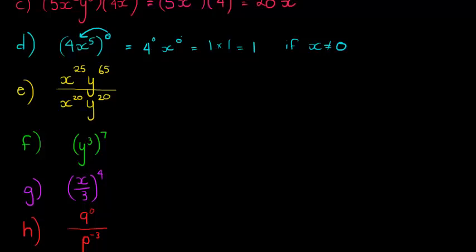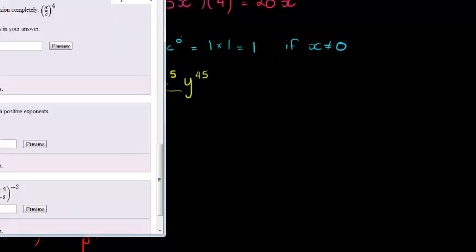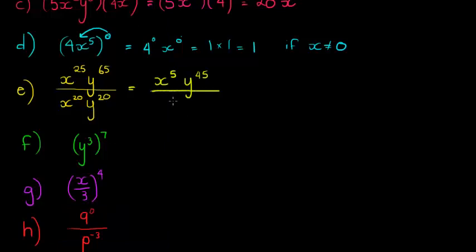Here we have examples of the quotient rule — working with division, where we subtract exponents. For x: there are 25 in the numerator and 20 in the denominator, so x has 5 more in the numerator, leaving x^5. For y: there are 45 more in the numerator, so the 20 in the denominator cancels with 20 of the y's, leaving y^45 in the numerator. The denominator only has 1s left, so that's the final answer.